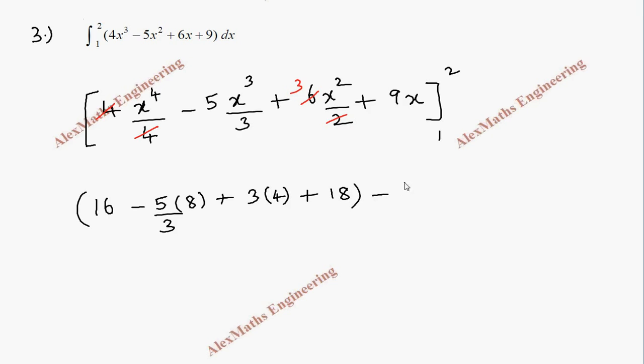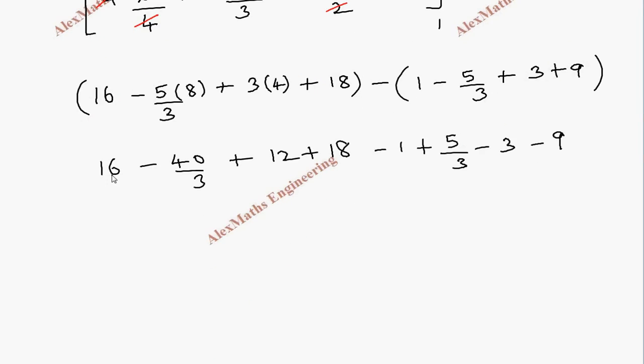Then minus: when I put the lower limit it will become 1 - 5/3 + 3 + 9. Now let's simplify this. This is 16 - 40/3 + 12 + 18 - 1 + 5/3 - 3 - 9. Now let's add the numbers: 16...